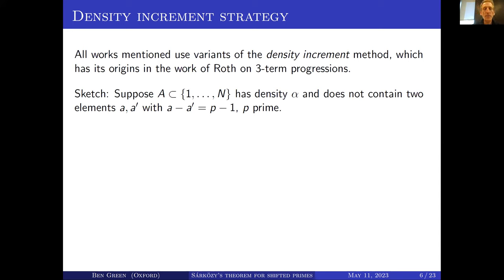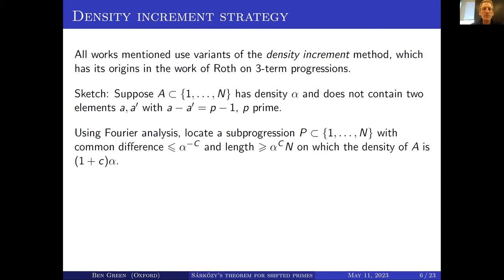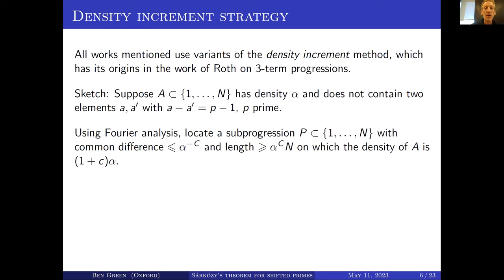Let me briefly sketch how that works. You suppose you have a subset of {1,...,n} with some density alpha, and it doesn't contain two elements a and a' differing by a shifted prime p minus 1. Then you use some Fourier analysis — the circle method — and using that you locate a subprogression P which is fairly big, with common difference at most alpha^{-c} for some constant c, and length at least alpha^{c} times n, on which the density of A is a bit bigger — no longer alpha but a small multiple a little bit bigger than one of alpha.